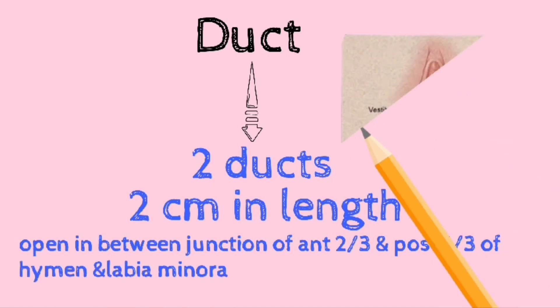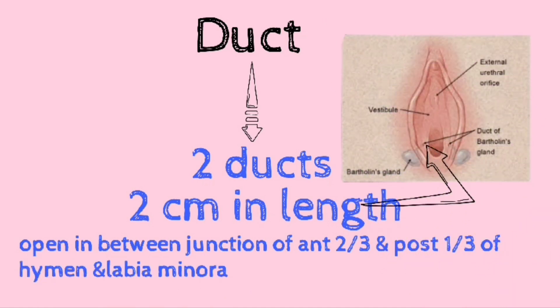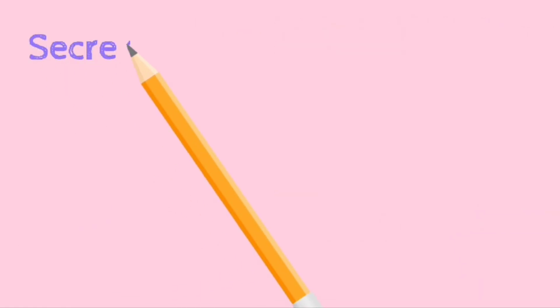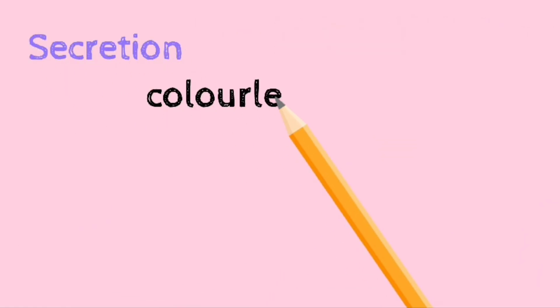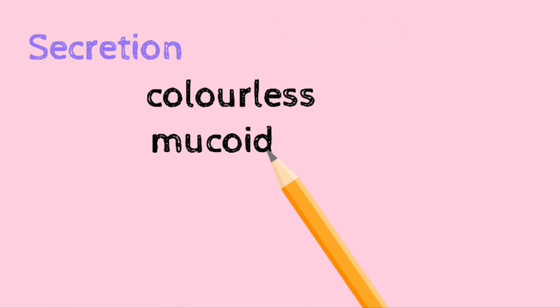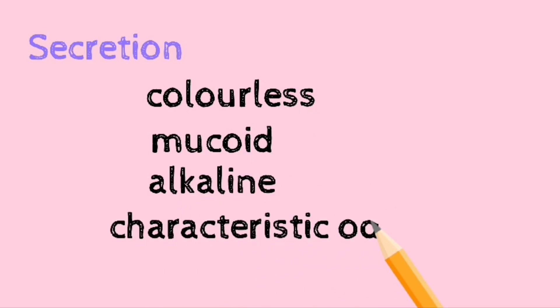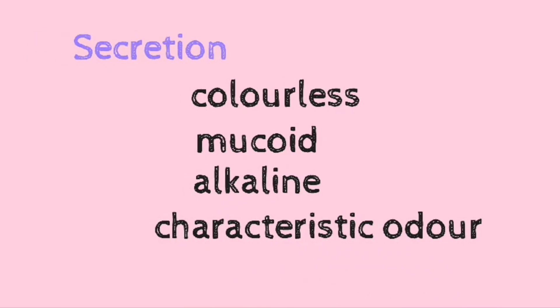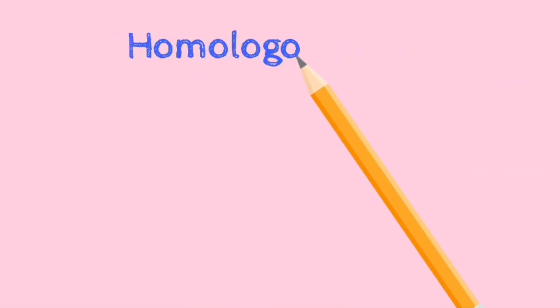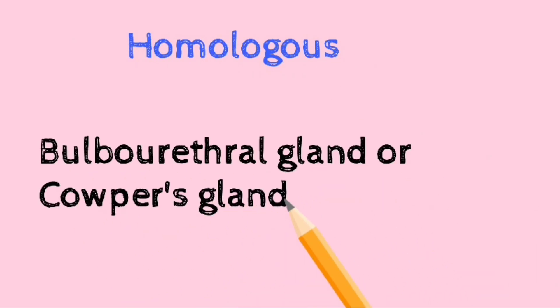Each duct is two centimeters in length and opens at the junction of the anterior two-thirds and posterior one-third of the hymen and labia minora. The secretion of this gland is colorless, mucoid, alkaline in nature, and a characteristic odor is present in the secretion.